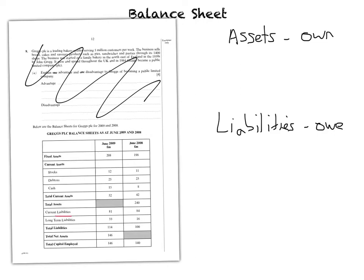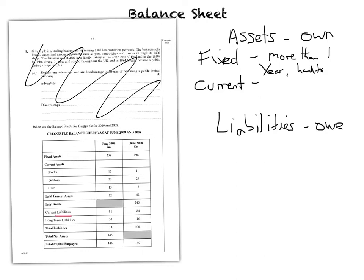You've got to turn assets into two different things. Assets can either be fixed assets or they can be current assets. A fixed asset is one that you're going to own for more than one year, and also they're quite hard to turn into cash. For example, a football club could be in loads of debt, but their main asset might be their stadium - and a stadium is really, really hard to turn into cash. So that's called a fixed asset.